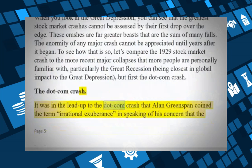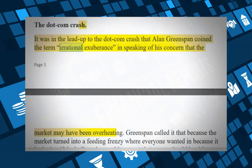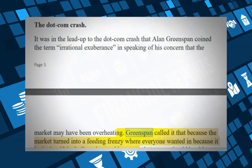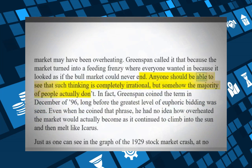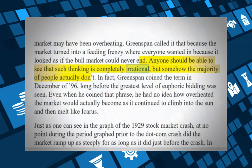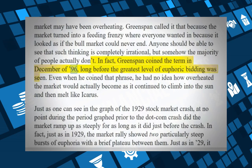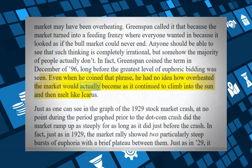It was in the lead-up to the dot-com crash that Alan Greenspan coined the term 'irrational exuberance,' expressing concern that the market may have been overheating. The market turned into a feeding frenzy where everyone wanted in because it looked as if the bull market could never end. Greenspan coined the term in December of 1996, long before the greatest level of euphoric bidding was seen. Even then, he had no idea how overheated the market would actually become as it continued to climb into the sun and melt like Icarus.